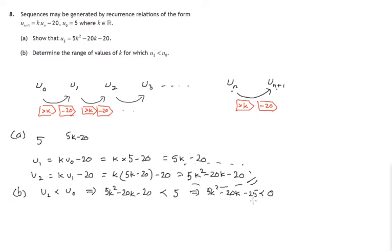In an inequality, you're allowed to divide both sides by the same positive number and still keep that inequality. If I divide everything on the left by 5, I'll end up with k squared minus 4k minus 5 is less than 0. Alternatively, you could take 5 out as a common factor on the left. Now let's think about this situation.